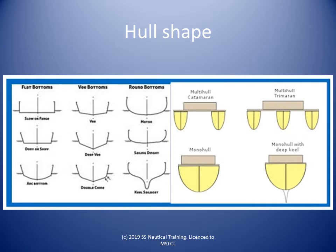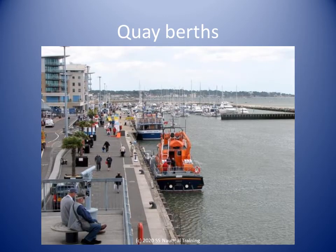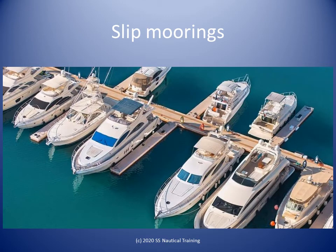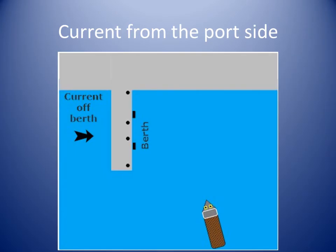Hull shape affects speed and maneuverability. The berth shown here is a quay. When approaching a berth like this, we must consider how the solid nature of the quay wall interacts with the current to affect your boat. These moorings are called slips — the current is free to flow under and between the berths.